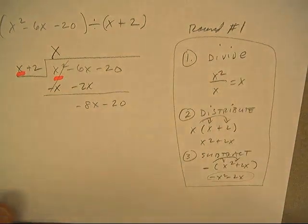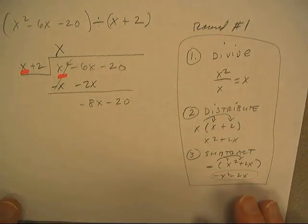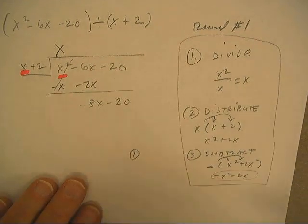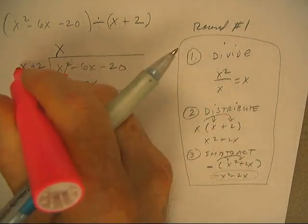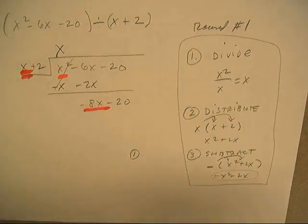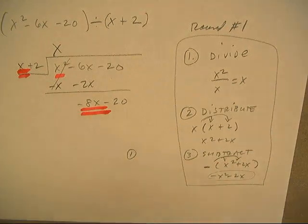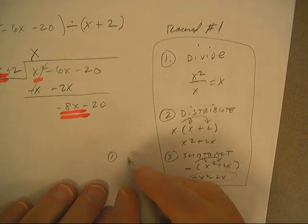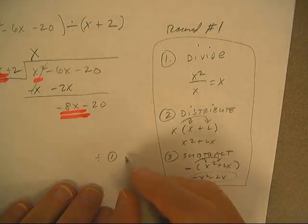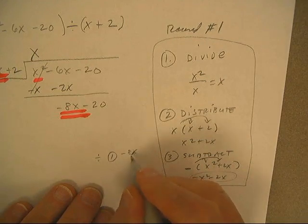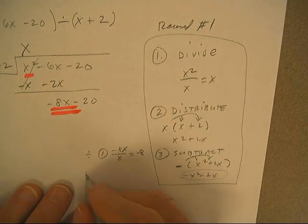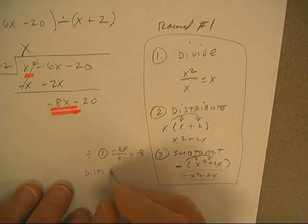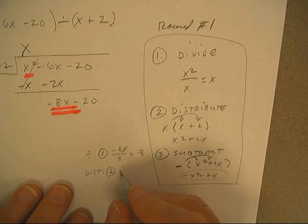Now we do it again. Take this one and divide by that one. The steps are the same. First step is divide: negative 8x divided by x is negative 8. The second step is distribute: negative 8 times x plus 2 is negative 8x minus 16.